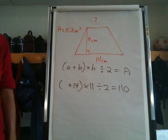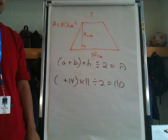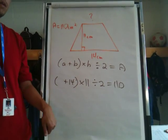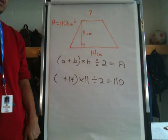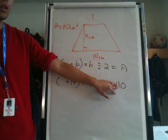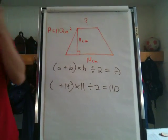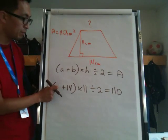5 plus 14 is 19. Times 11. Divided by 2. 104.5. We're close now. So for 104 something, maybe we go to 6 now. This is where estimating really comes into play too. So plug in 6.